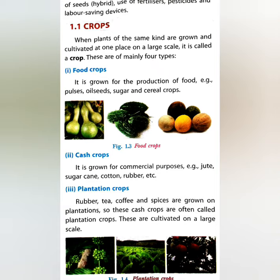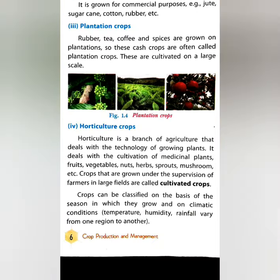For example, sugarcane, cotton, rubber, etc. So these crops are often called plantation crops. These are cultivated on a larger scale. Rubber, tea, coffee, and spice — these are all plantation crops.